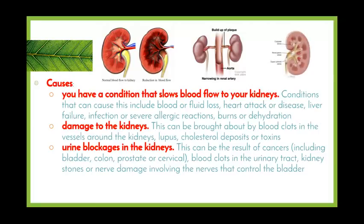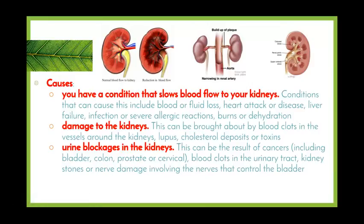Lastly, urine blockages in the kidney can cause failure. This can be the result of cancers, including bladder, colon, prostate or cervical cancer, blood clots in the urinary tract, kidney stones, or nerve damage involving the nerves that control the bladder. So if urine is not being removed from the bladder, there could be a buildup in the kidneys. As we can see from the picture, quite large kidney stones forming in the kidney are blocking the collecting ducts towards the ureter, preventing urine from reaching the bladder.